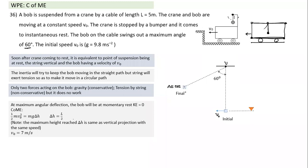Taking the bottom position as gravitational reference, initial energy = ½mv₀². At 60°, if length is L, height gained = L − L·cos60° = L/2. By conservation of energy: ½mv₀² = mg·(L/2), giving v₀² = gL. Substituting, v₀ = √(gL) = 7 m/s approximately.